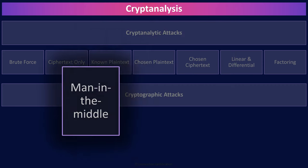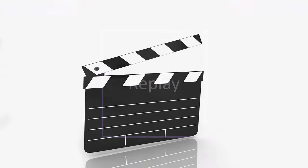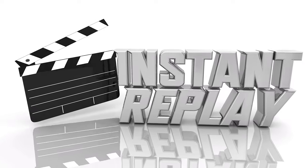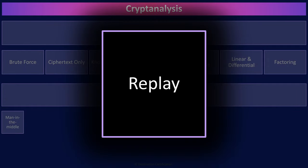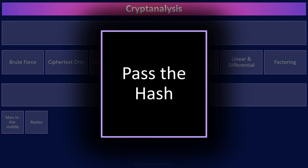A replay attack is a form of man-in-the-middle attack. The attacker eavesdrops and intercepts data being sent, such as a user's hashed password being sent to the server. The attacker cannot decipher the intercepted data, but they can replay it — resend it later. For example, they could resend the hash of a user's password to masquerade as that user and gain unauthorized access. A pass-the-hash attack is a type of replay attack, and a replay attack is a type of man-in-the-middle attack.